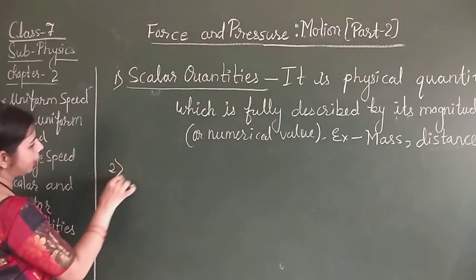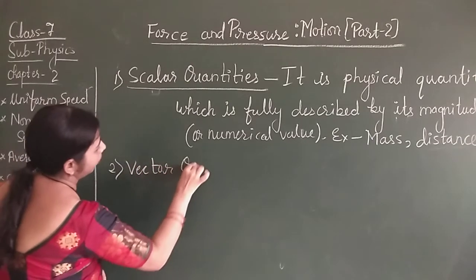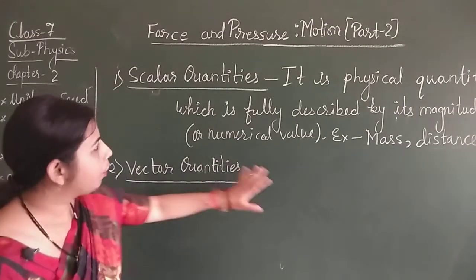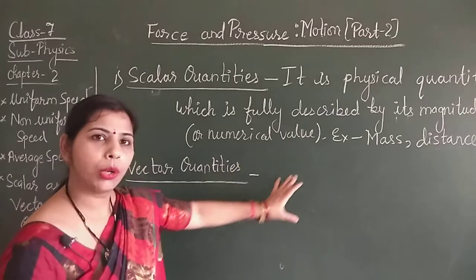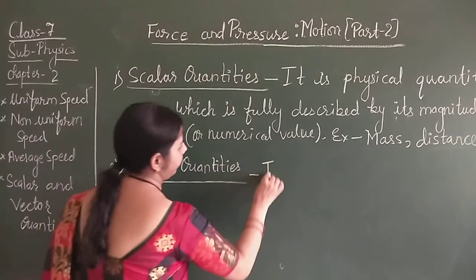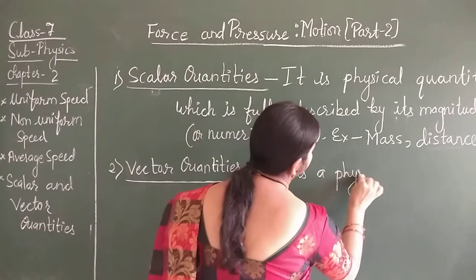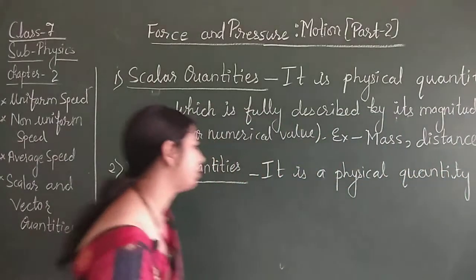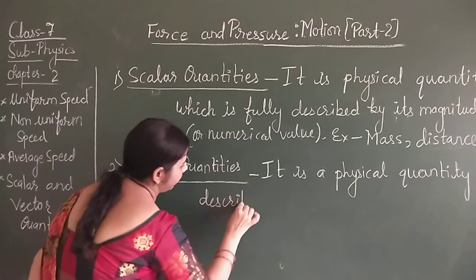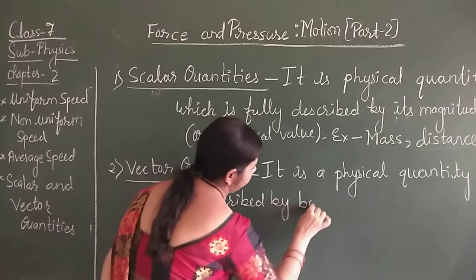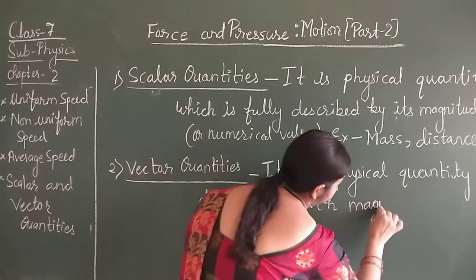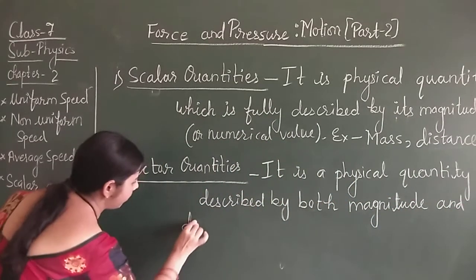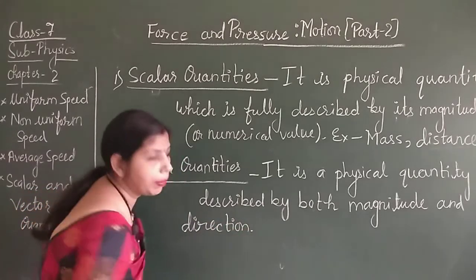Next, vector quantities. A vector quantity is also a physical quantity, but for describing this quantity, magnitude as well as direction is needed. It is a physical quantity described by both magnitude and direction. For example, displacement and force.